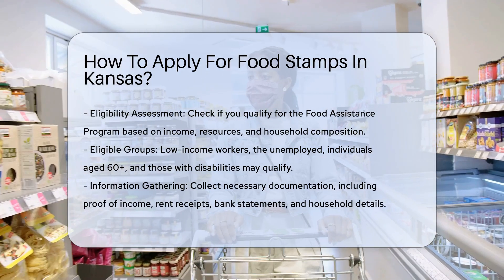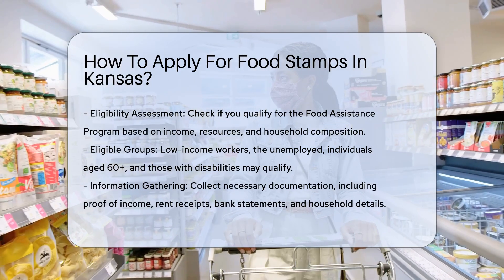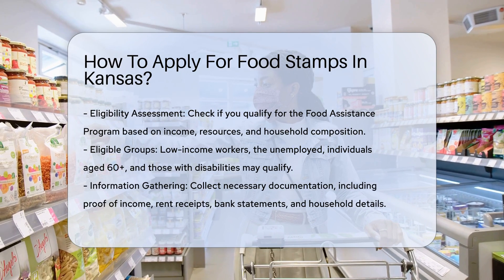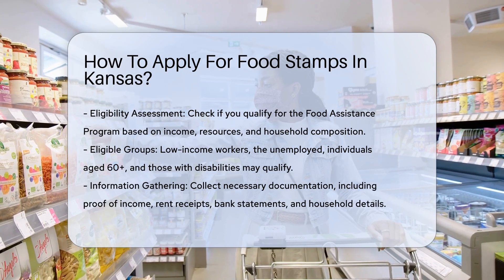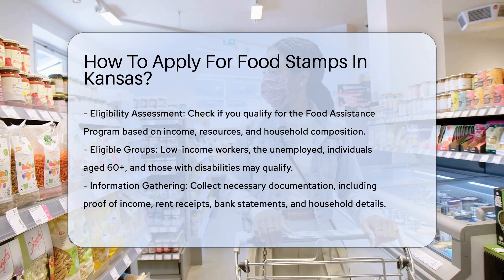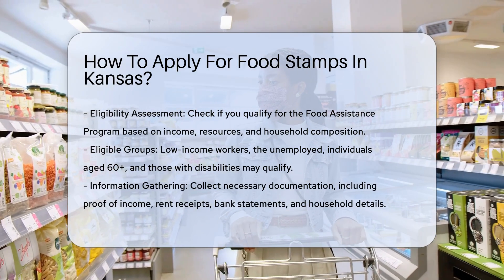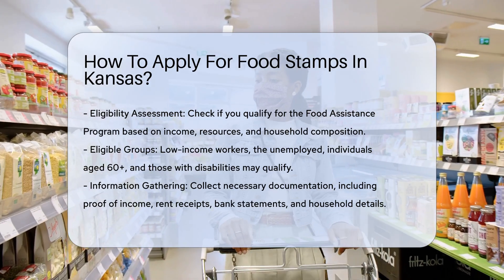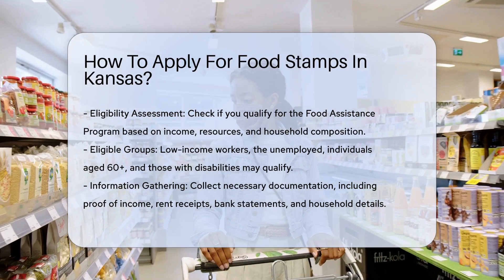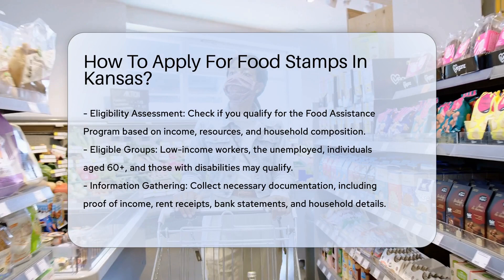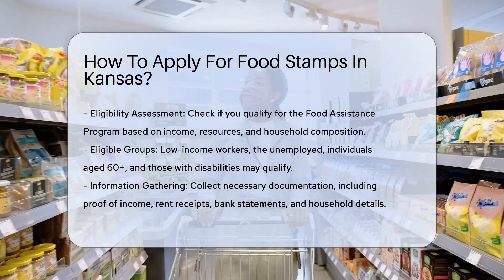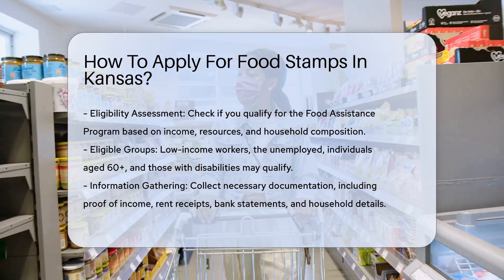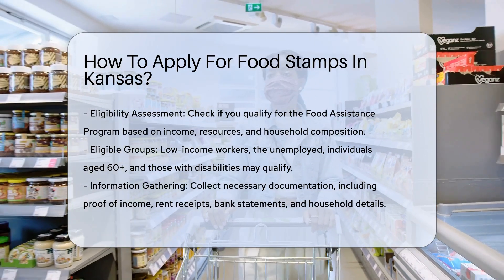Step 1: Determine eligibility. First, you need to see if you qualify for the Food Assistance Program. Eligibility is based on income, resources, and household composition. For example, persons who work but have low income, the unemployed, and those who live together and buy food together may be eligible. Additionally, persons age 60 and older and those with disabilities may also qualify.